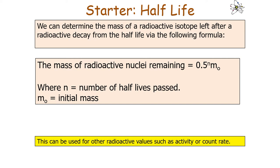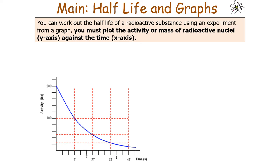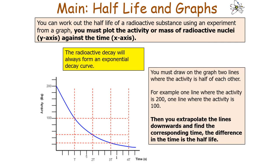You can also determine the half-life of a radioactive substance experimentally by plotting a graph of activity or radioactive mass on the y-axis against time on the x-axis. Because the chance of decay is constant throughout, this always forms an exponential decay curve. On the decay curve, draw two horizontal lines where one activity value is half the other — for example 200 and 100 — extrapolate these lines down to the time axis, and the difference in time gives the half-life.